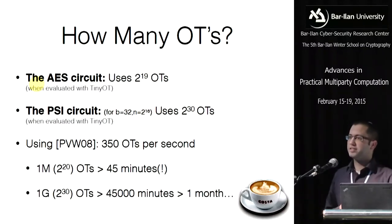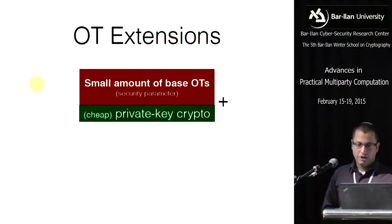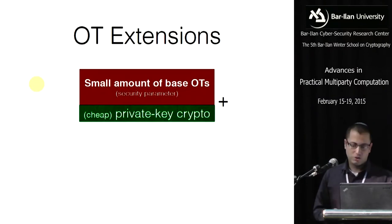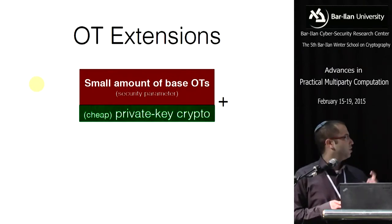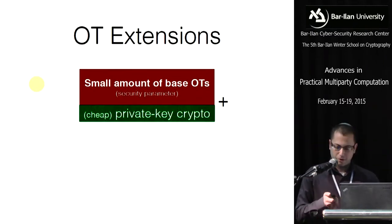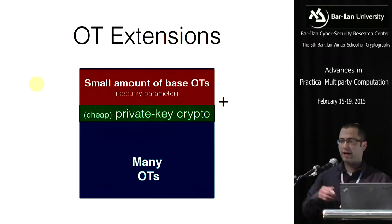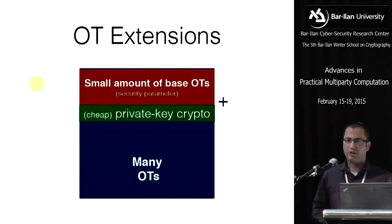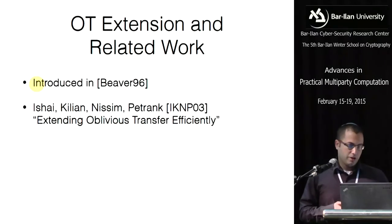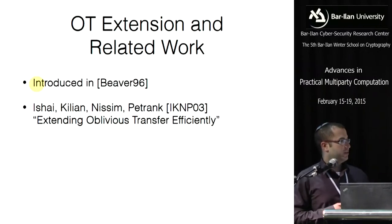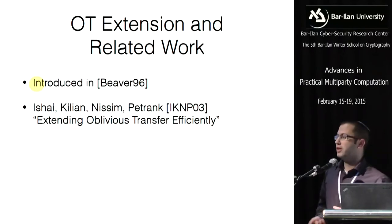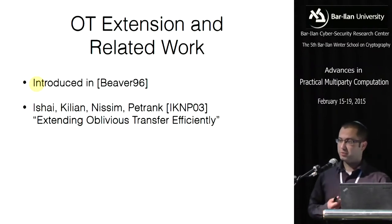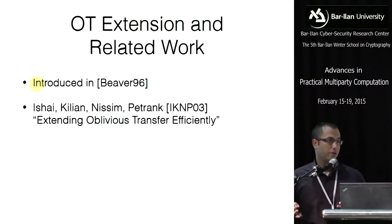So we need something more efficient. For this, we have OT extensions. In OT extensions, we perform a small number of base OTs — something like the security parameter — plus some cheap symmetric private-key crypto, and together we get many OTs. This is like hybrid encryption where public-key crypto is expensive, so we use it to establish a symmetric key and work in the private-key setting. OT extension was introduced by Beaver in 1996, and Ishai, Kilian, Nissim, and Petrank showed a very efficient protocol both in the semi-honest and malicious model.